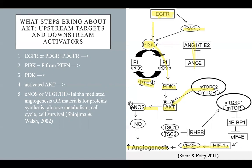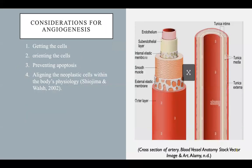All of this can be dually involved and have multiple manifestations beyond angiogenesis. We are creating vasculature — talking about angiogenesis — and this vessel system, with arteries, is intensely complicated. There are important considerations involved: the first is getting the cells, orienting them, protecting them from apoptosis, and aligning them within the body's physiology.